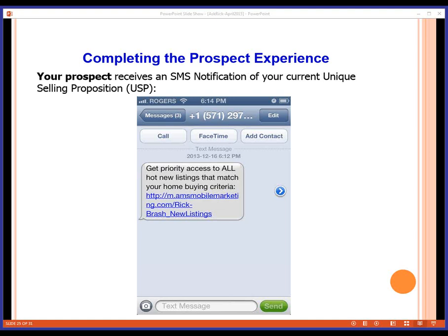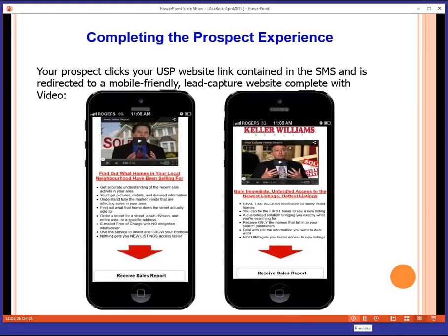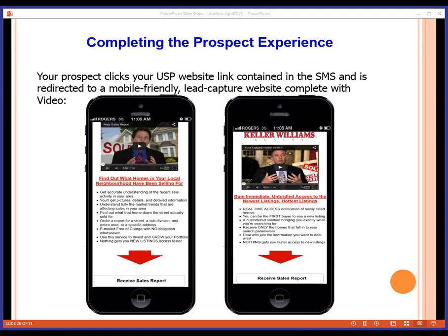The message that goes out says: 'Get priority access to all the hot new listings that match your home buying criteria.' Below that in blue with a line underneath is actually a link. The prospect on their iPhone takes their finger or thumb and clicks the link — and they see a fully mobile-optimized landing page. That gives us a second kick at the cat to get some information from this prospect. Under normal circumstances using typical hotline technology, as soon as they hang up they're gone. Here's a second opportunity for us to get the prospect onto a landing page relevant to the process at hand.